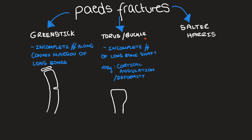Torus or buccal fractures occur due to axial loading injuries, which cause incomplete fractures of the long bone shaft. On an x-ray, you'll see subtle cortical angulation or deformity. This diagram demonstrates what kind of appearance you're looking for — this is the bump or angulation you're looking for.